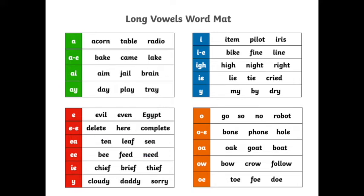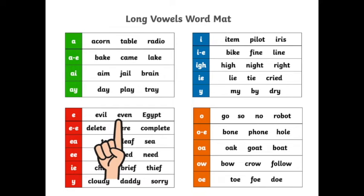Let's move down to the E — long vowel E. Are you ready? From the first row: E-V-I-L: Evil. E-V-N: Even.